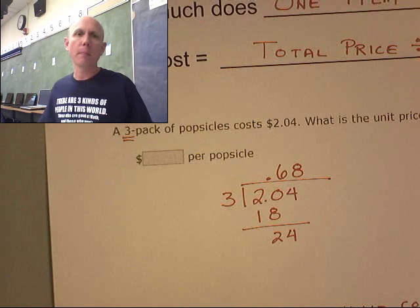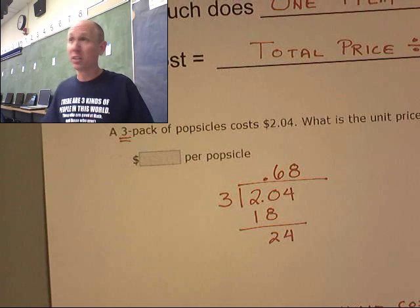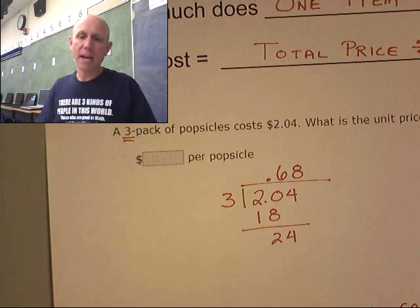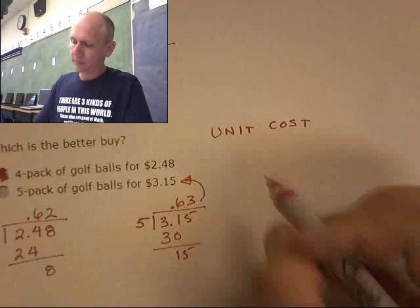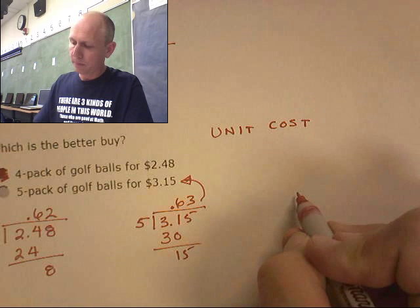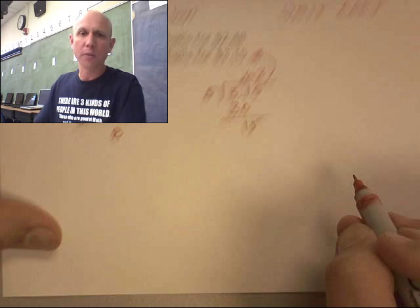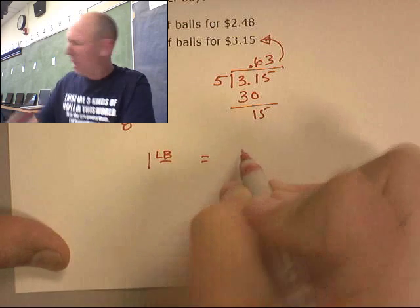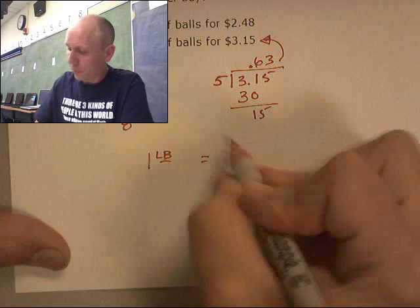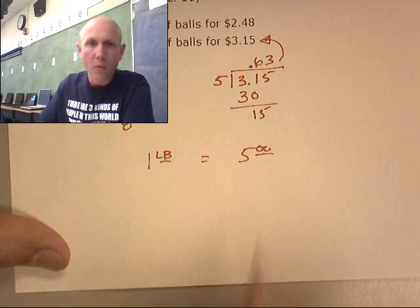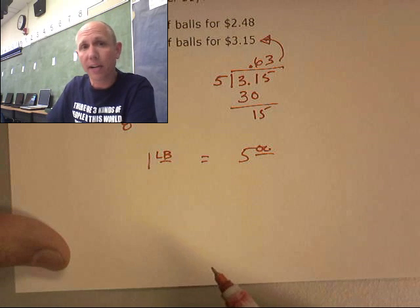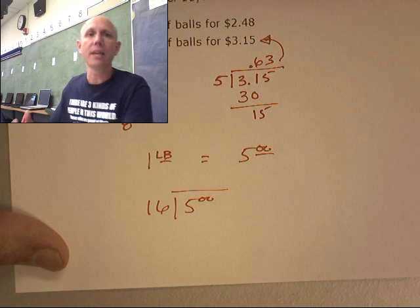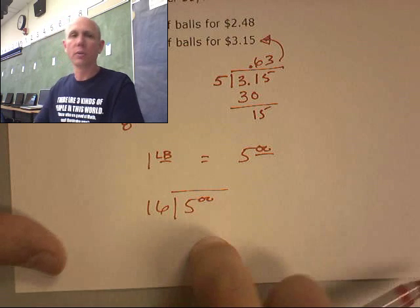This also works for cost per ounce. So excuse me, I'm going to sneeze. If one pound equals like five dollars, what's the price per ounce? How many ounces are in a pound? This would be five dollars divided by 16. That would give you your price per ounce.